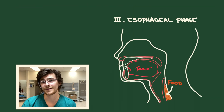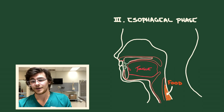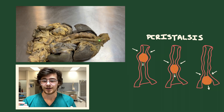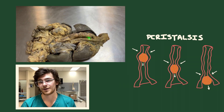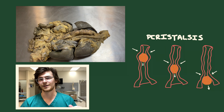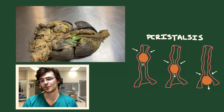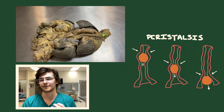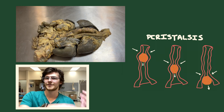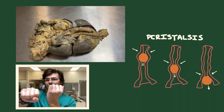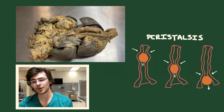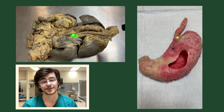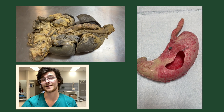Finally, we have the esophageal phase. Once food enters the esophagus via the upper esophageal sphincter, it is moved down the tube via peristalsis — the wave-like contractions that move food along the digestive tract via local stretching and flexing of the digestive wall. The bolus then reaches the lower esophageal sphincter, which relaxes, allowing the contents to enter the stomach.